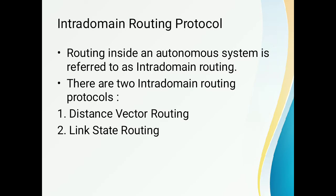Routing protocols are classified as intra-domain and inter-domain. A routing protocol specifies how routers communicate with each other, distributing information that enables them to select routes between any two nodes on a computer network. Intra-domain routing refers to routing inside an autonomous system. There are two intra-domain routing protocols: first, distance vector routing; second, link state routing.